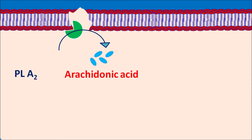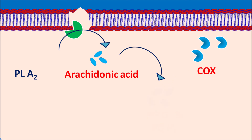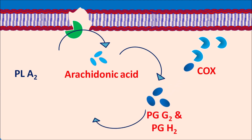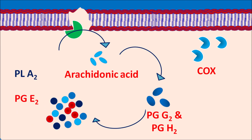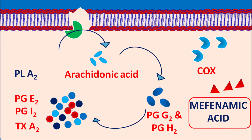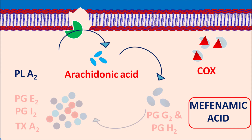Phospholipase A2 is a cleavage enzyme that acts on phospholipids to release arachidonic acid, a C20 fatty acid. The COX enzyme converts arachidonic acid into cyclic endoperoxides PGG2 and PGH2, which are further converted into various prostaglandins such as PGE2, PGI2, and thromboxane A2. PGE2 and PGI2 particularly increase the pain sensation, which is blocked by mefenamic acid by inhibiting COX enzyme activity, thereby reducing prostaglandin synthesis, pain sensation, and controlling menstrual pain in conditions like dysmenorrhea.